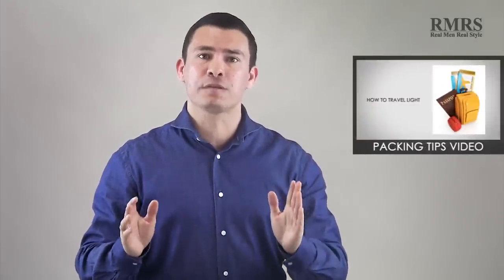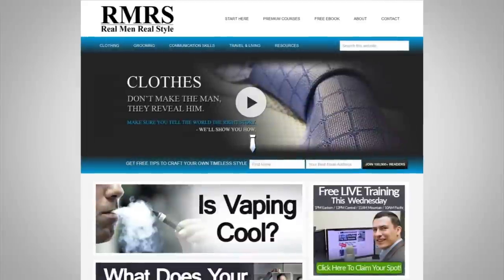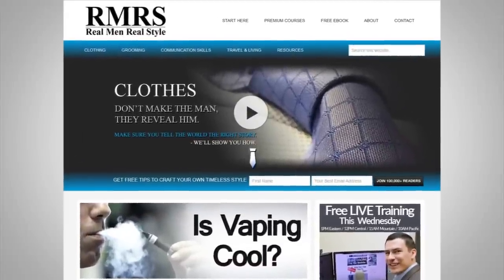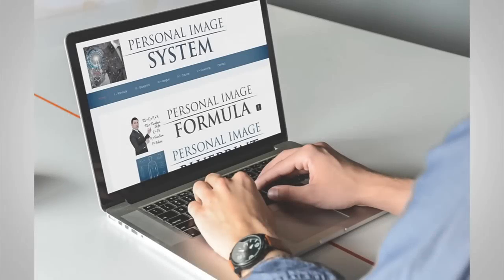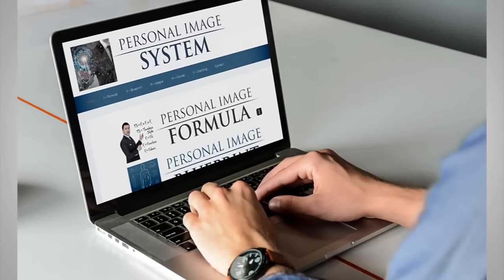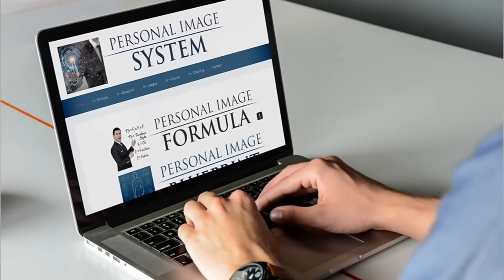And again, remember, you can get more information over at Real Men Real Style. I've got all this broken out into an article and you can check out some of my other products. Check out the Personal Image System. Really proud of this course we just put out. It's got the Personal Image Formula, the Personal Image Blueprint, the Personal Image League, the Personal Image Course, and the Personal Image Coaching for men that want to learn how to use the science of style to control their image, to increase their earnings, to increase attraction. Guys, take care. I'll see you in the next video.